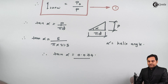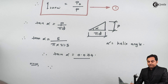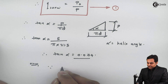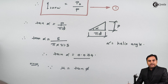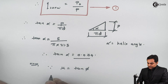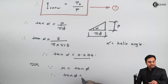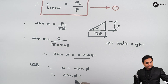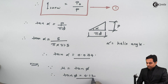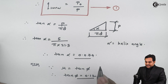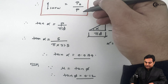Since the coefficient of friction mu equals tan of the friction angle phi, and mu is known as 0.12, therefore tan(phi) = 0.12. Now with both tan(alpha) and tan(phi) known, we can easily calculate the ideal effort and actual effort.